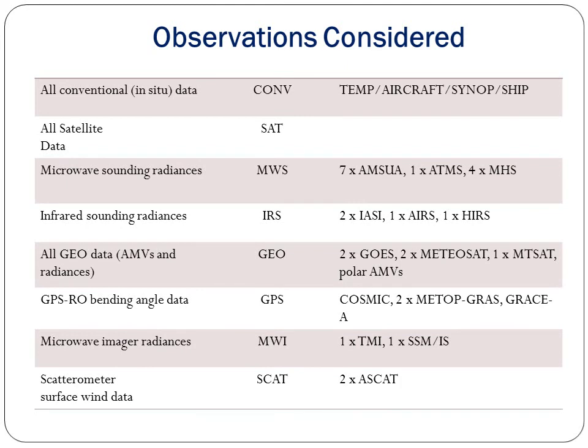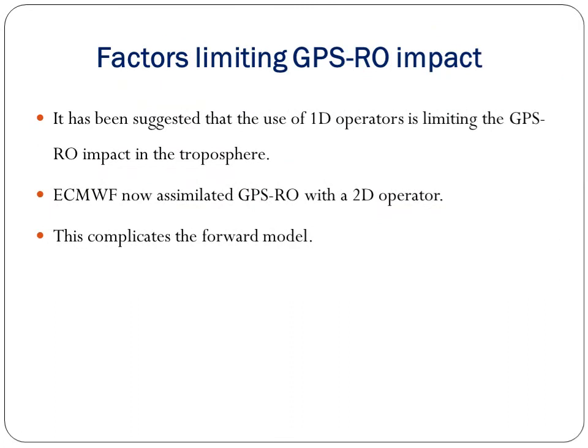Deriving the refractive index profiles is a major factor. Assuming spherical symmetry, the ionosphere-corrected bending angle can be written as alpha(A) = -2A. The factors limiting GPSRO impact include the suggestion that use of one-dimensional operators is limiting GPSRO impact in the troposphere. ECMWF now assimilates GPSRO with a 2D operator rather than 1D, which also complicates the forward model.